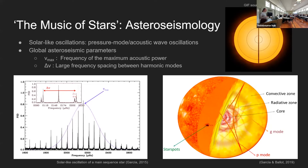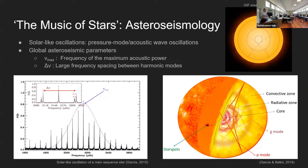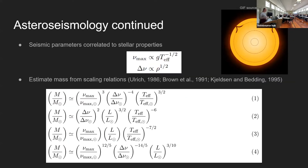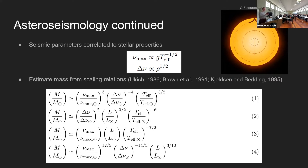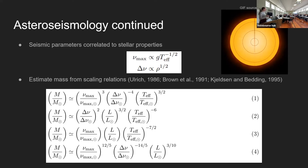From solar-like oscillations we can measure two global asteroseismic parameters. The first is nu_max, which is the frequency of maximum acoustic power. The second is delta_nu, which is the large frequency difference between signal peaks of the same spherical harmonic mode. Nu_max is related to the surface gravity and temperature, and delta_nu is related to the average density of the star. From those two relations and the Stefan-Boltzmann luminosity law we can derive four seismic mass equations, shown on screen in terms of nu_max, delta_nu, temperature, and luminosity.